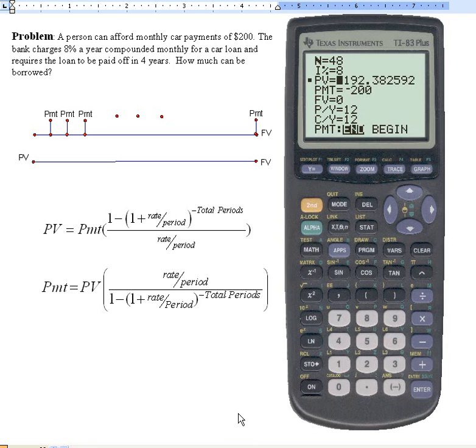Well, that's not very much. Maybe we could go back and see what would happen if we could change our payments to $250 a month. Let's see what we could borrow in that case. Now we can solve this like we did before, and we see now that we can borrow $10,240.